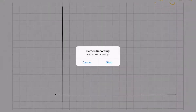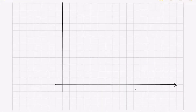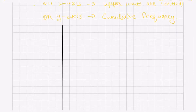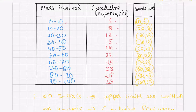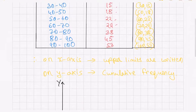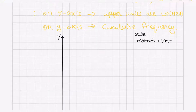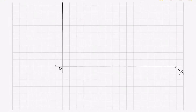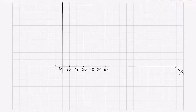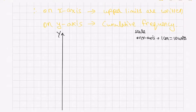As you can see, I have drawn the x-axis and y-axis. Now what you have to do is take a suitable scale. For the x-axis coordinates, these values are 10, 20, 30, 40, 50 — they are in multiples of 10. So you have to write: scale on x-axis: 1 cm = 10 units. Therefore on x-axis you write 0, 10, 20, 30, 40, 50, 60, 70, 80, 90, and finally 100.